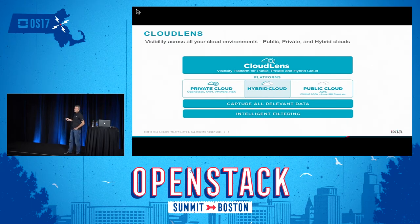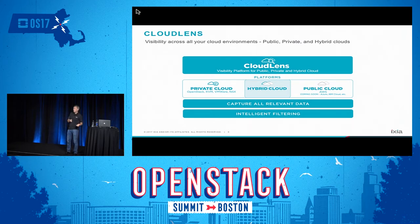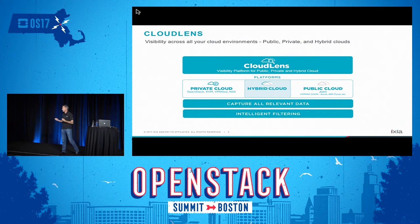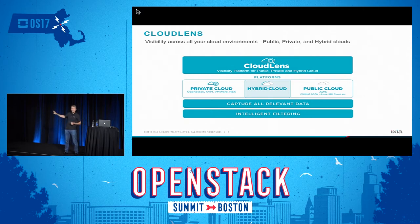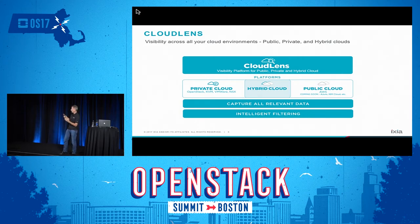The solution is called CloudLens, and it is an umbrella solution that covers from the private cloud to the public cloud, with a hybrid cloud in between. Because those environments are so different — you don't have the same level of permissions in a public cloud as in a private cloud — the solution has different implementation options for AWS, Azure, or private data centers. You can capture all relevant data, full packets if you want, or just pick what you need by filtering from level 2 to level 4.